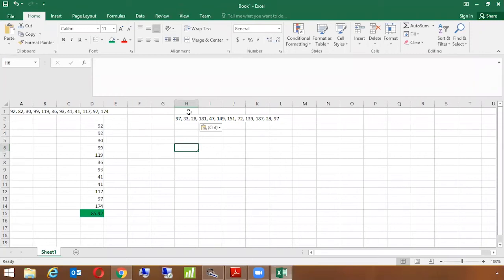The highest value is 187, then 181, then 151, 149, then 139. I'm doing this in front of you so you can understand. After 139 we have 97 twice, then 47, then 37, then 33, then 28.